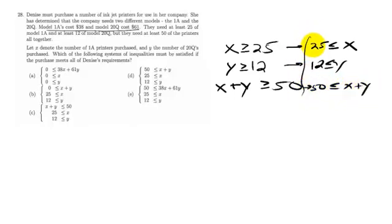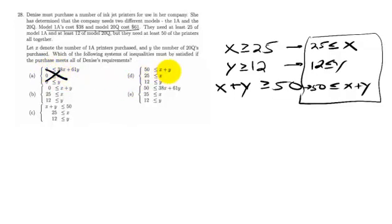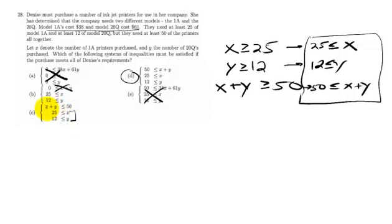So these are my three conditions. Looking at the answer choices — this one looks promising, I like this one. One option has X plus Y greater than or equal to zero — nope. Another says X plus Y less than or equal to 50, and 25 less than or equal to X. The first two conditions work, but the total inequality doesn't, because it says altogether you have to buy less than 50 — that's not what the problem says. So number 28 is D.